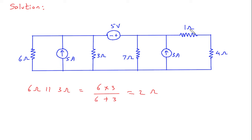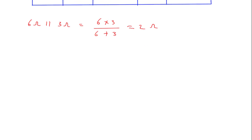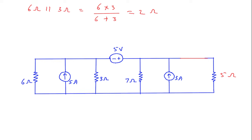Also this 1 Ohm series with 4 Ohm — so this will be 1 plus 4 is equal to 5 Ohm. And this 6 Ohm and 3 Ohm parallel combination will be 2 Ohm.